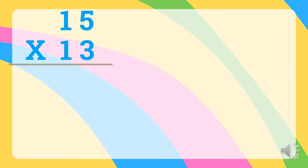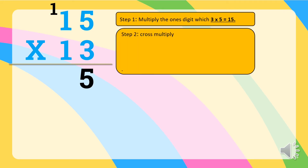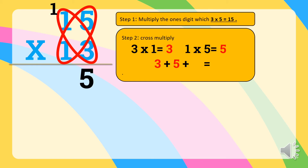Let's have another example: 15 times 13. Multiply the ones digit — 3 times 5 is equal to 15. So let's bring down 5 and carry the 1 to the tens place. Step 2 is to cross-multiply. So let's multiply 3 times 1 is equal to 3. Next, 1 times 5 is equal to 5. Then let's add 3 plus 5 is equal to 8, then add the carried 1, which gives 9.